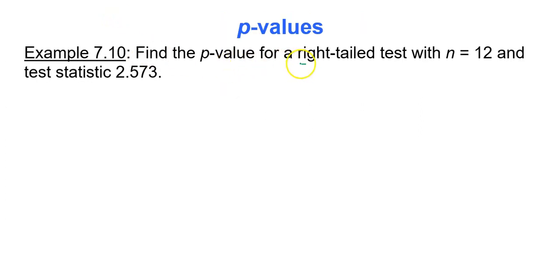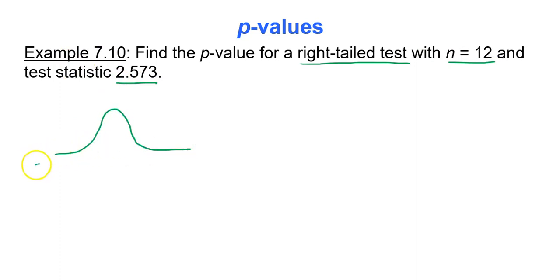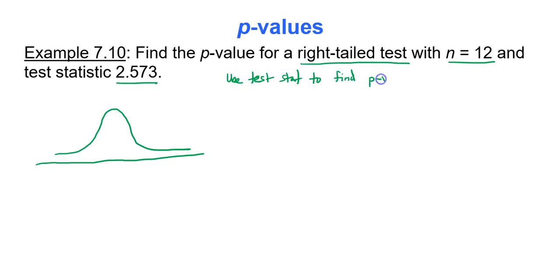Let's find the p-value for a right-tailed test with n equals 12 and a test statistic of 2.573. We use the test statistic to find the p-value. For a right-tailed test, on your bell curve you shade the right region. The test statistic separates this right-hand region from the rest of the bell curve, and the area of that right tail is the p-value.